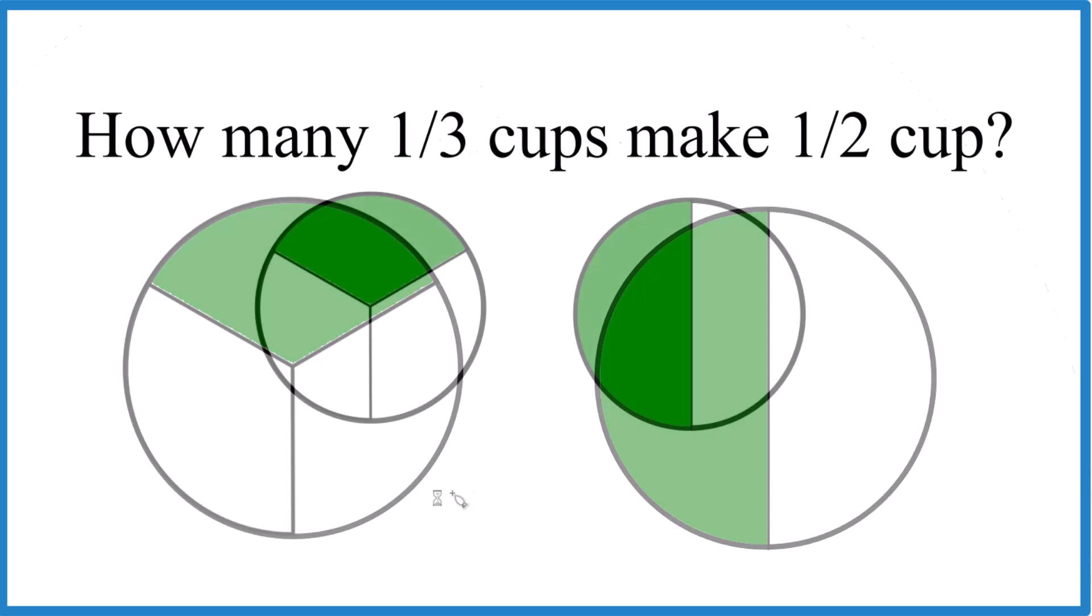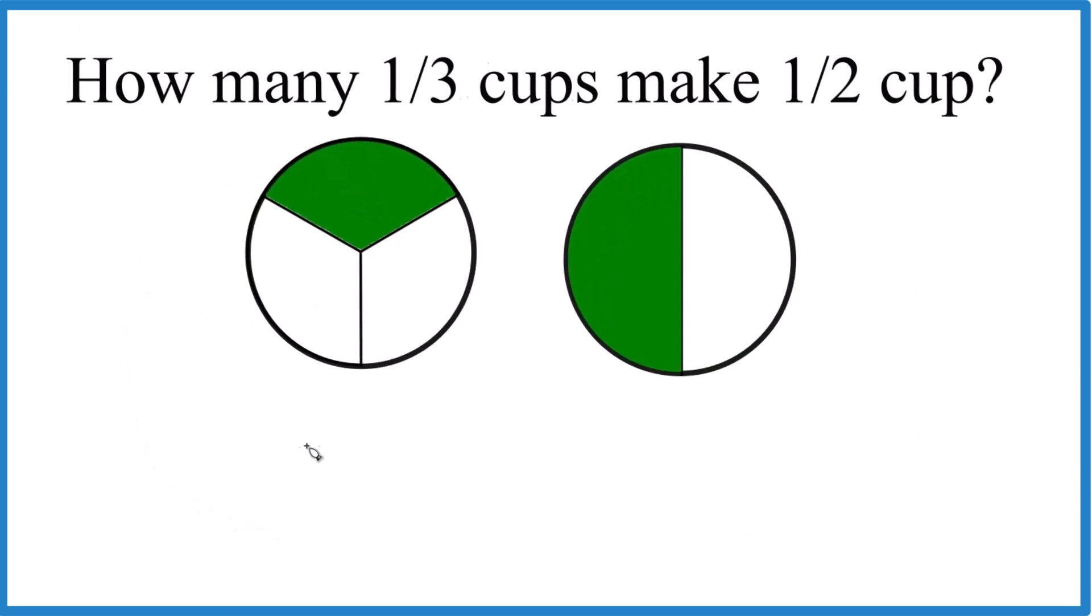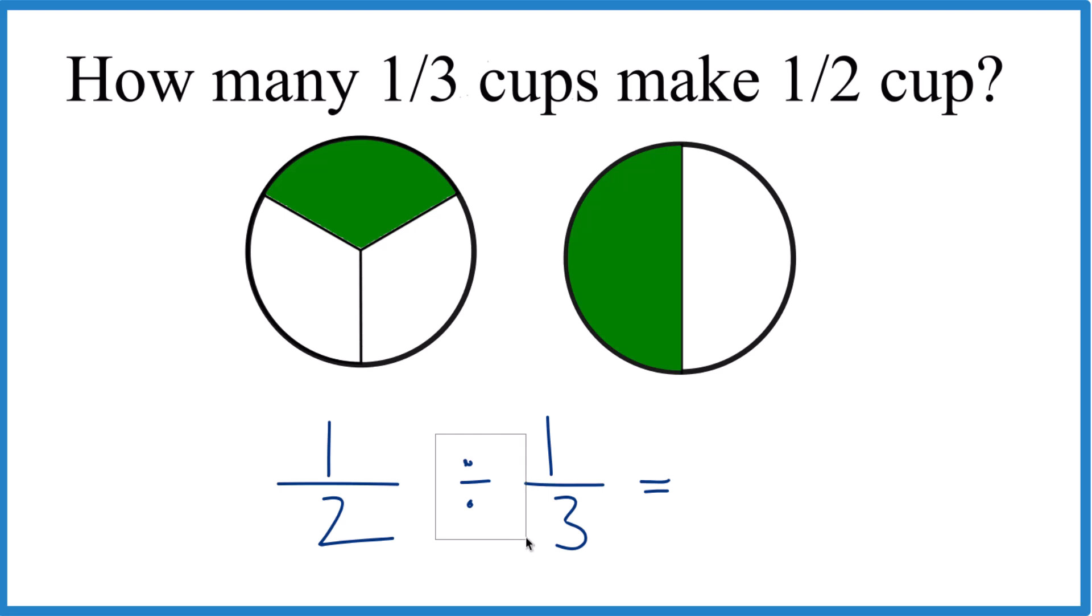Here's how you do it mathematically. So basically we're asking, what is one-half divided by one-third? And the easier way to do this is not to divide, but to multiply.